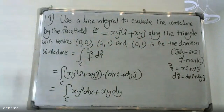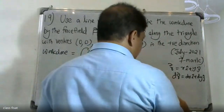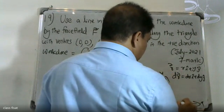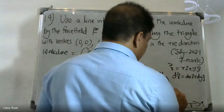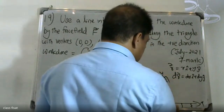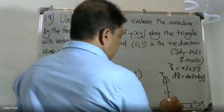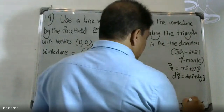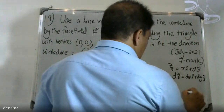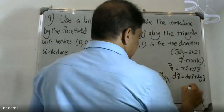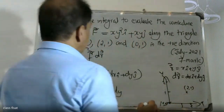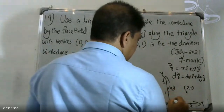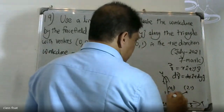The x-axis and y-axis are given. The vertices are: point (0,0), point (2,1), and point (0,1). We go in the positive direction.